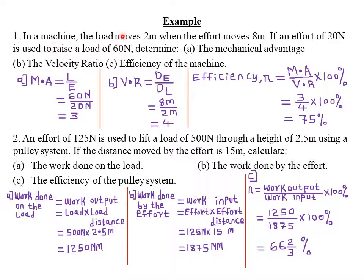Example 1: In a machine, the load moves 2 meters when the effort moves 8 meters. The effort is 20 newtons and is used to raise a load of 60 newtons. Part A — Mechanical advantage equals load divided by effort: 60 newtons divided by 20 newtons equals 3. Mechanical advantage has no units. Part B — Velocity ratio equals effort distance divided by load distance: 8 meters divided by 2 meters equals 4, which is a unitless constant.